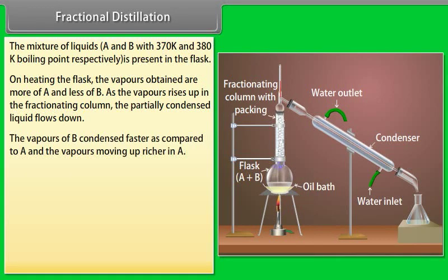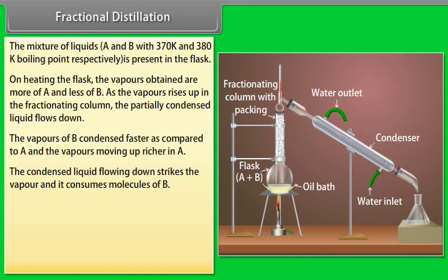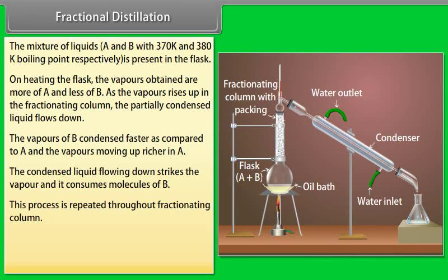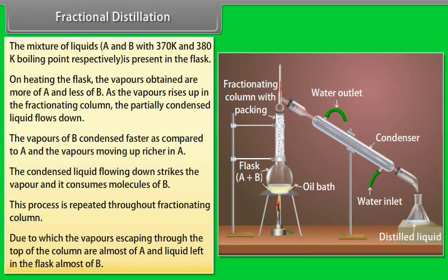As the vapors rise up in the fractionating column, the partially condensed liquid flows down. The vapors of B condense faster compared to A, so vapors moving up are richer in A. The condensed liquid flowing down strikes the vapor and consumes molecules of B. This process is repeated throughout the fractionating column, so the vapors escaping through the top are almost pure A and the liquid left in the flask is almost pure B.